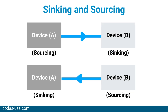The current is flowing from device A to device B, so device A can be said to be sourcing the current, while device B is sinking the current. If the current is flowing from device B to device A, then device B is sourcing the DC current, while device A is sinking that current.